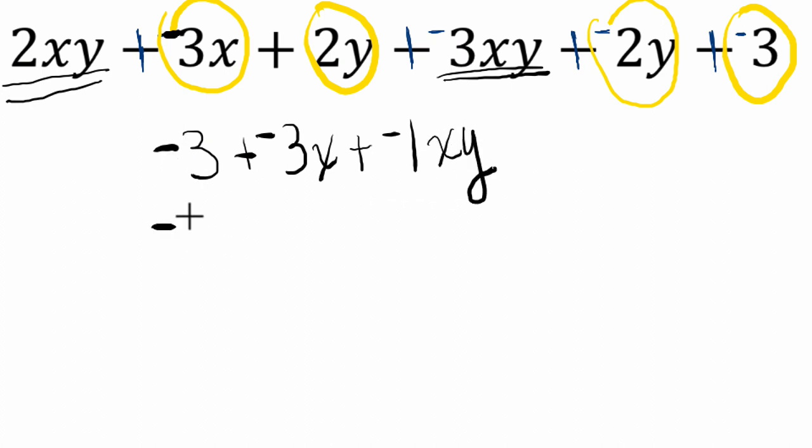Another way to write this is negative 3 plus minus 3x, it's just minus 3x, plus negative 1 xy is just minus xy.